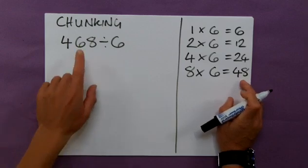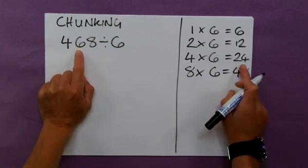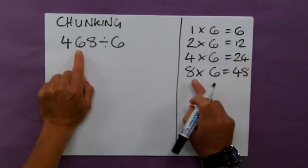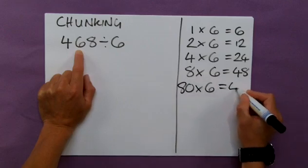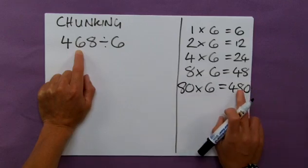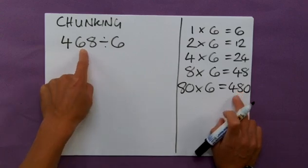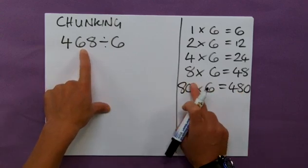Now, I need to try and get close to this number here, and at the moment, I'm nowhere near. If I was to say 80 times 6, I would get 480. Now, that tells me that I'm actually too big with my chunks of 6.